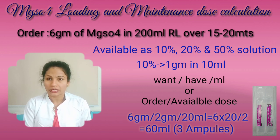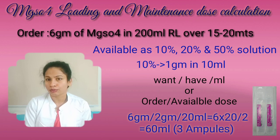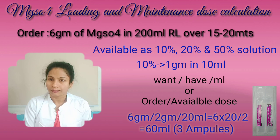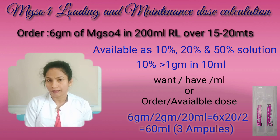To take 6 grams of magnesium sulphate from the 10% solution, we add it to 200 ml of normal saline or RL. The 10% solution is available in 20 ml ampoules, so to take 60 ml we have to take 3 ampoules of magnesium sulphate.